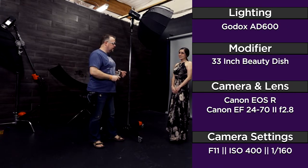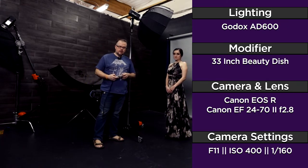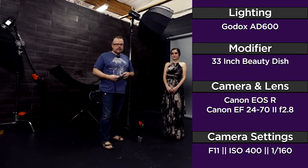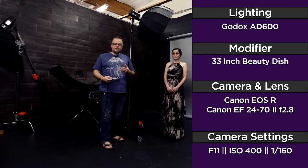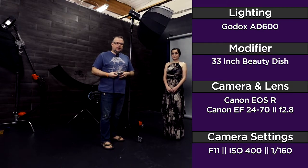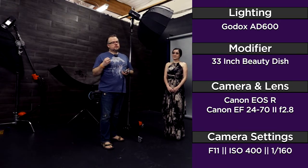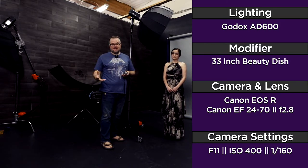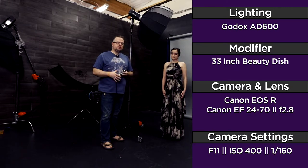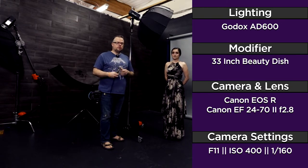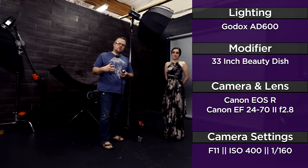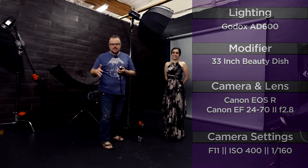I'm setting my camera to F11, ISO 400, and 1/160th of a second for the shutter speed. F11 is my preferred aperture for most of my work because I get a deep richness to the shadows and the light that I really like — it's just part of my style. F8 is where I used to photograph and it's a general rule of thumb to start at F8 for studio lighting work, then graduate to F11 as you experiment and learn.